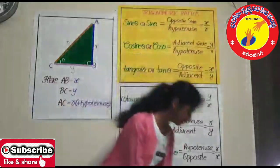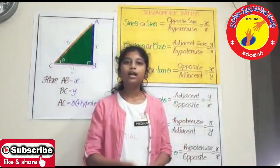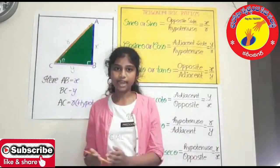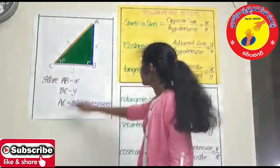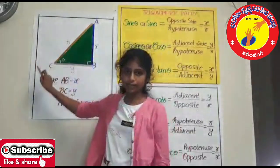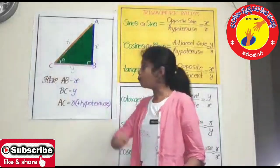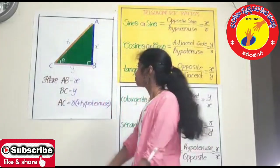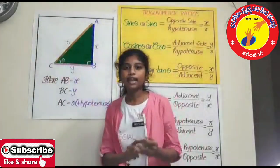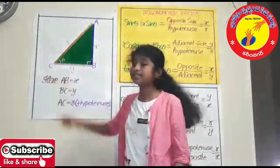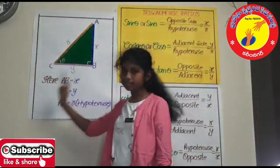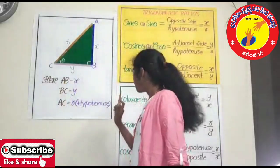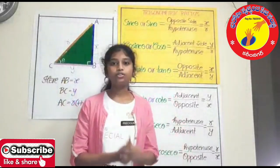Angle is denoted either by theta, alpha, beta, etc. So let's get into the actual topic: trigonometric ratios. I hope you all know about a triangle — it has three sides and the angle made by the sides of a triangle is 180 degrees. Here, let us consider right-angle triangle ABC, right angle at B. The side opposite to the right angle is AC, that is the hypotenuse. The hypotenuse is the longest side of a triangle. Let us consider angle theta — the side opposite to theta is AB and the side adjacent to theta is BC. Here, AB equals X, BC equals Y, and AC equals R, that is the hypotenuse.